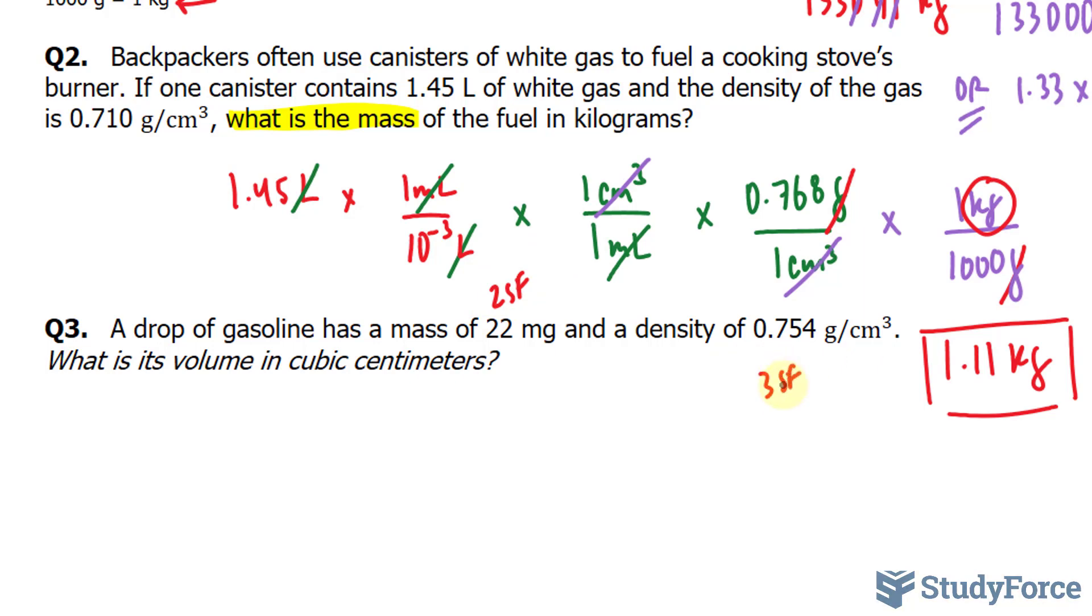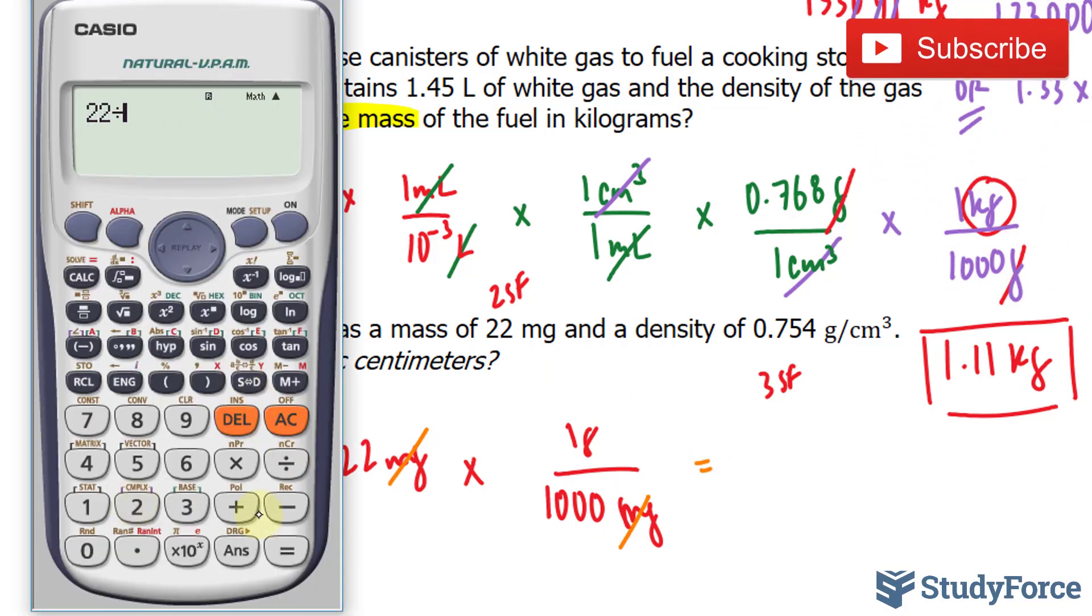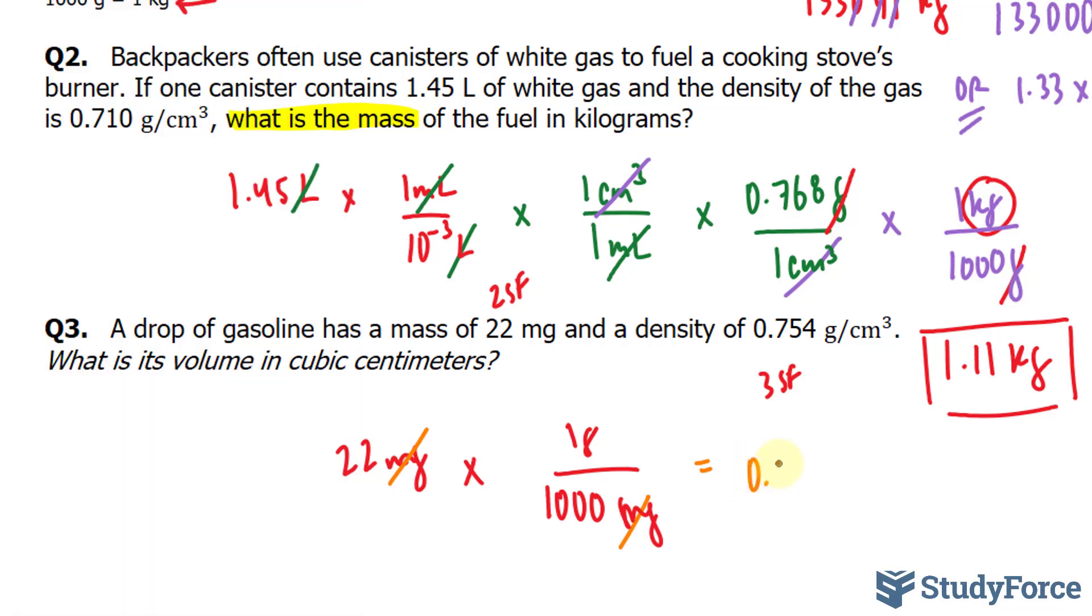We'll take 22 milligrams and first convert it into grams because our density is in terms of grams. To convert 22 milligrams into grams, I know that 1,000 milligrams is equal to 1 gram. So 1,000 milligrams is 1 gram. I can cancel out the milligrams, where I end up with 22 divided by 1,000 gives me this many grams: 0.022 grams.